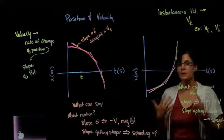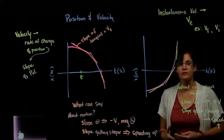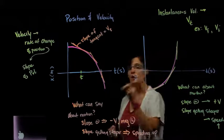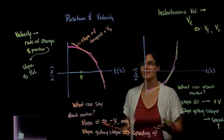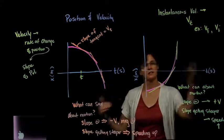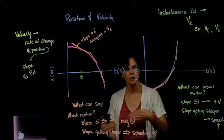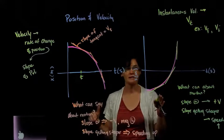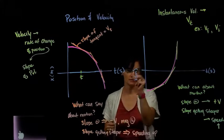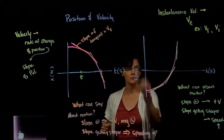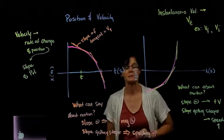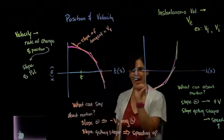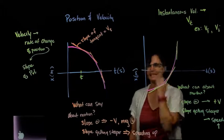In a position versus time graph, whether it's a constant velocity or a changing velocity, the slope of the position versus time graph gives us the velocity. For constant velocity it's an easy straight-line slope calculation. With a curved position graph, we can find specific instantaneous velocities at specific points in time — it's still the slope, just the slope of the tangent line at that point, which gives us the instantaneous velocity.